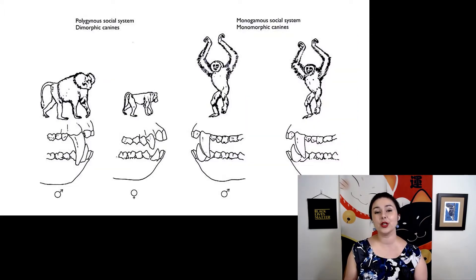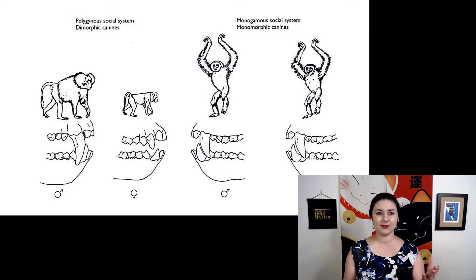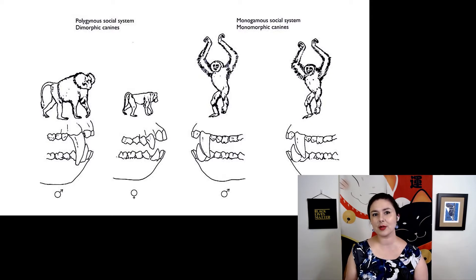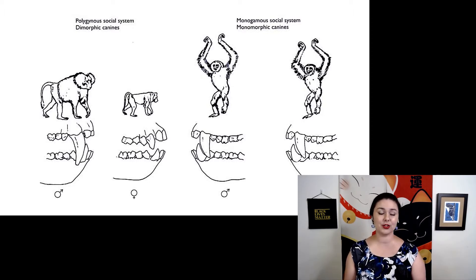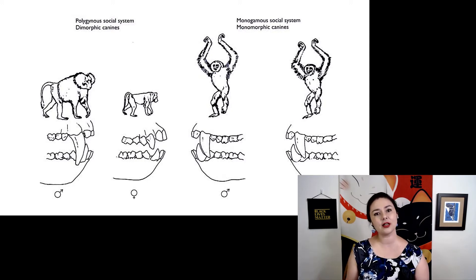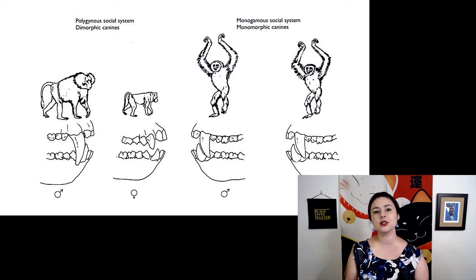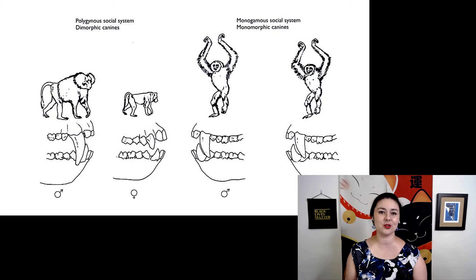What's interesting is that in different social systems, we see different types and levels of sexual dimorphism. On our left, we have a polygynous social system and we see pretty big dimorphism — the male baboon is much larger than the female and has much larger canines, because male baboons actively fight each other and bite to protect their female harems. On our right, we have gibbons with a monogamous system, and we don't see much sexual dimorphism at all. They're about the same size and shape, and both have canines because they are a territorial species actively defending their home range.